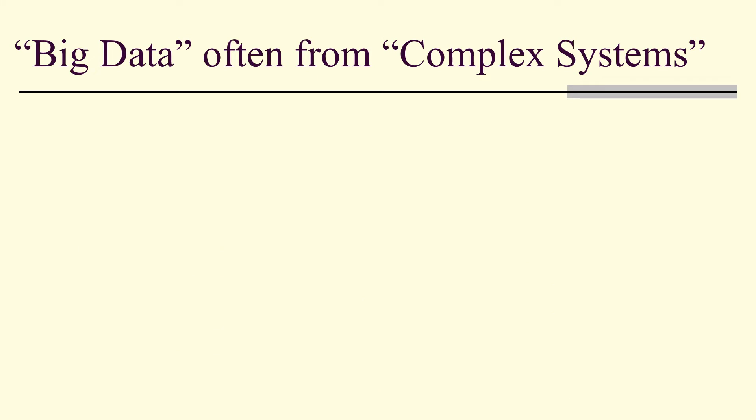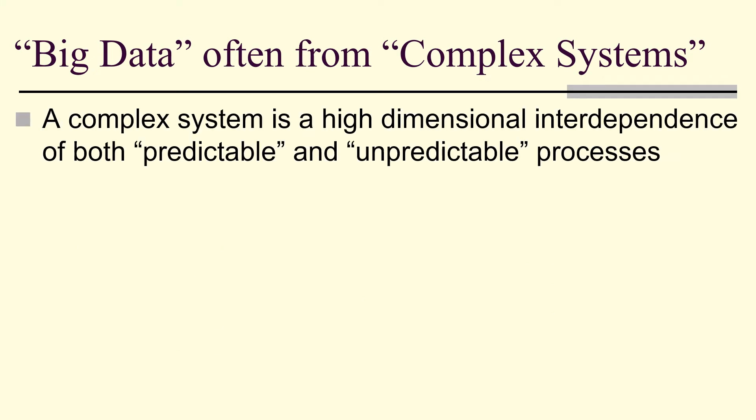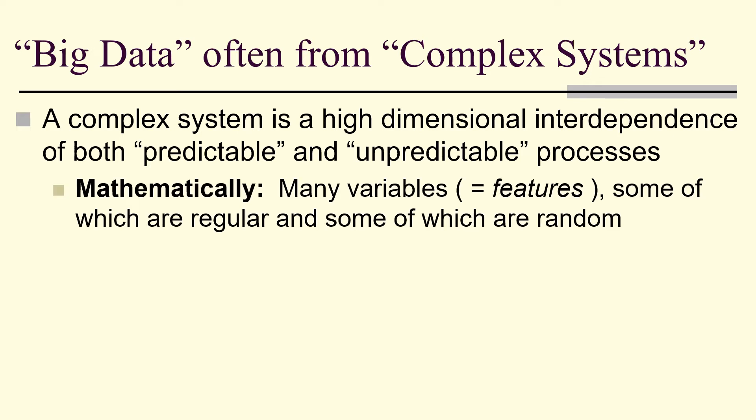So big data often comes from complex systems. A complex system is a high dimensional interdependence of both predictable and unpredictable processes. Mathematically, many variables, and we tend to call these variables features. Some are regular and some are random.